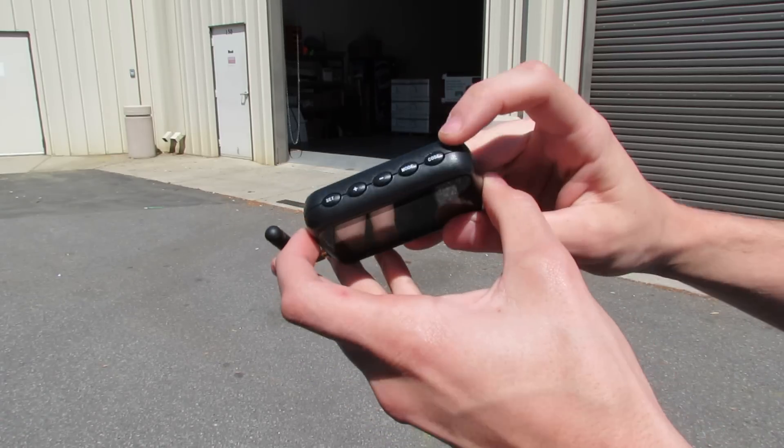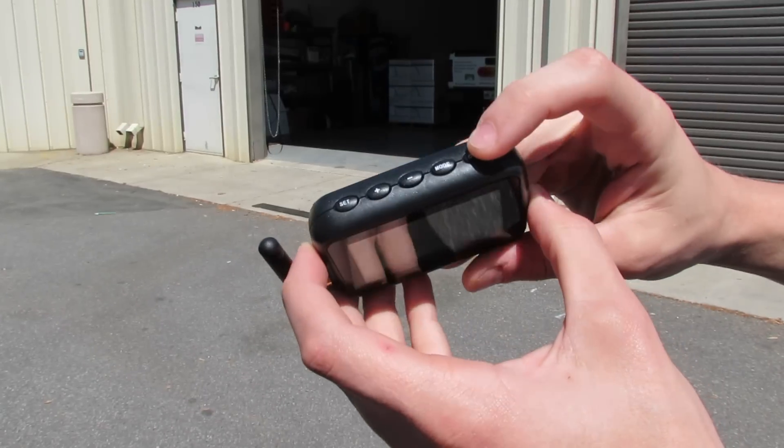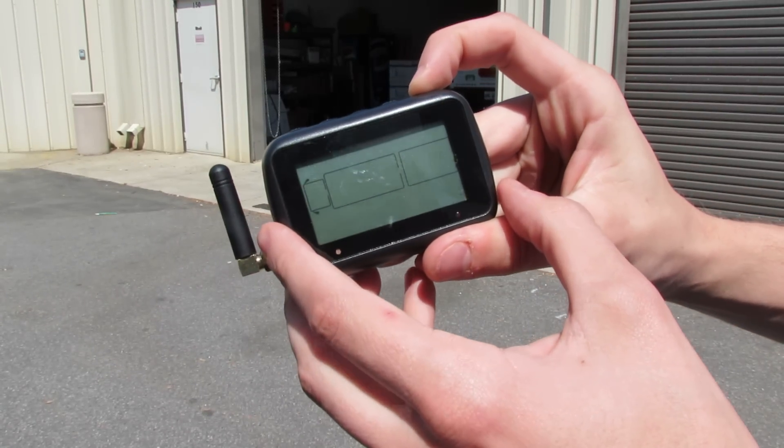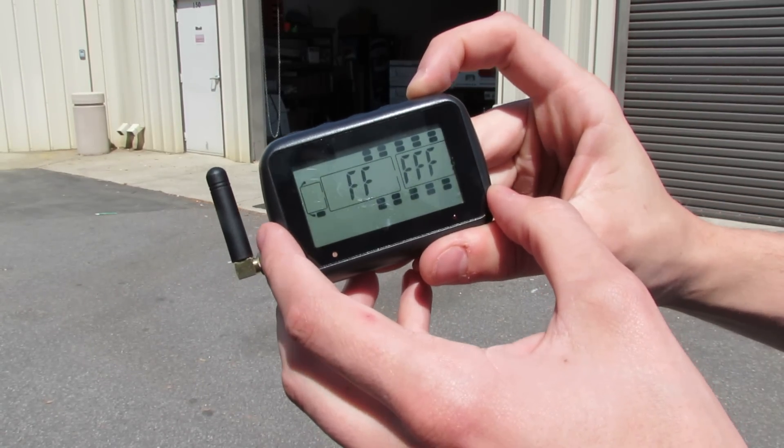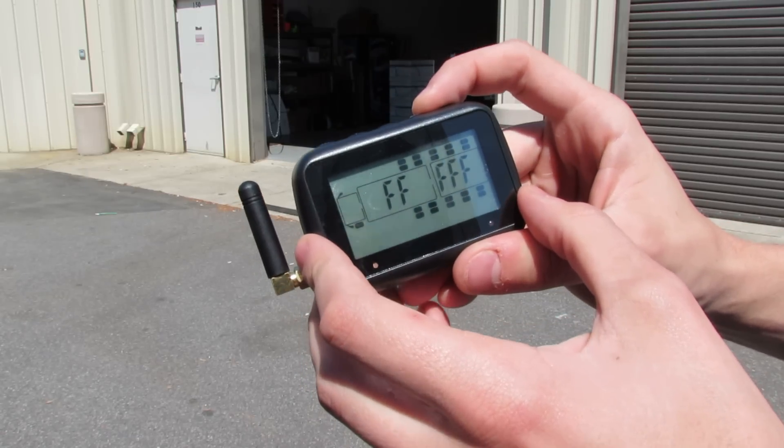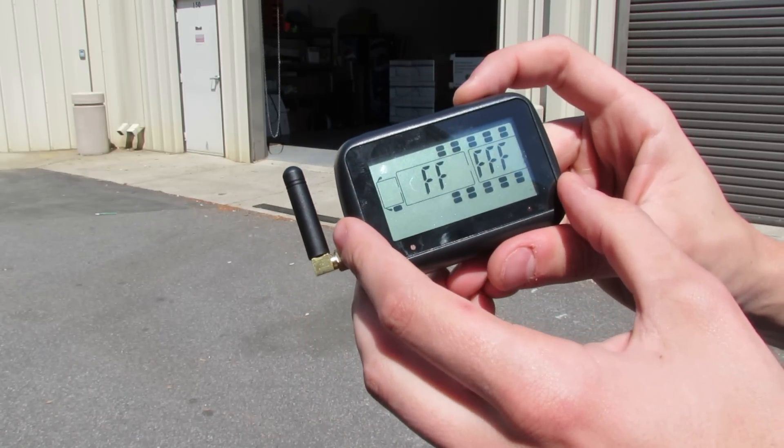To program your sensor, press the code button on the side for 6 seconds until you hear a beep. For this demonstration, we will be using the outer right dually of our RV.